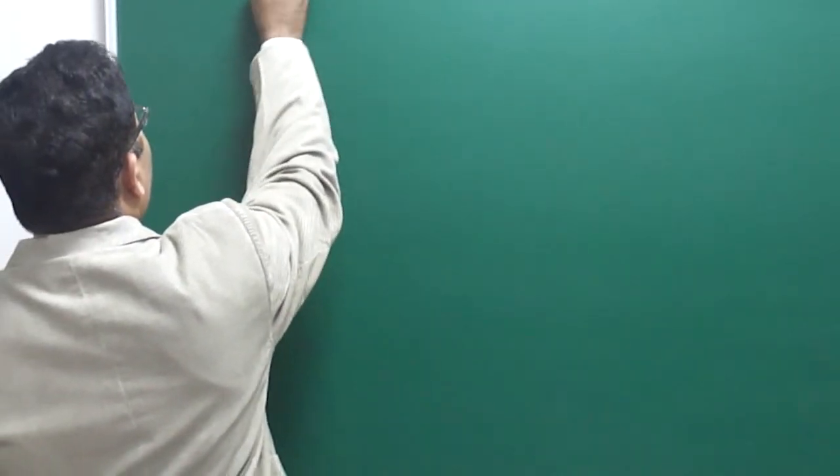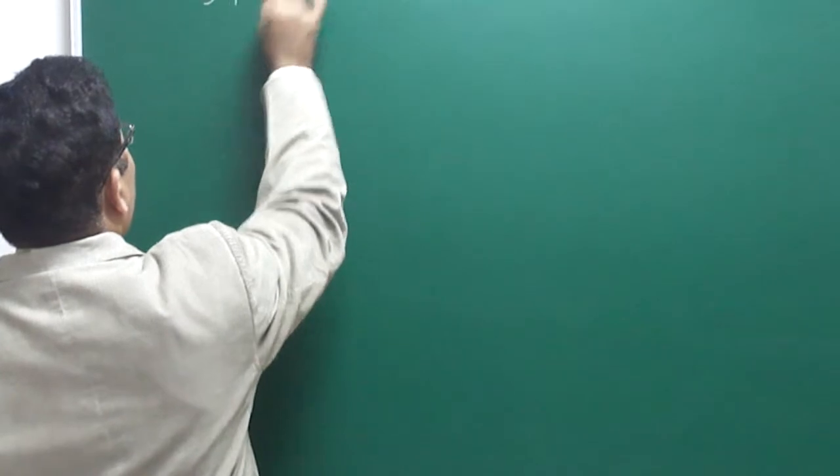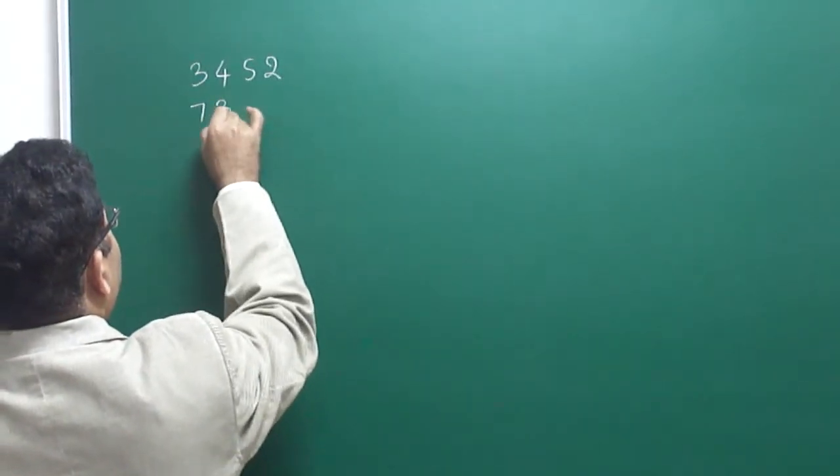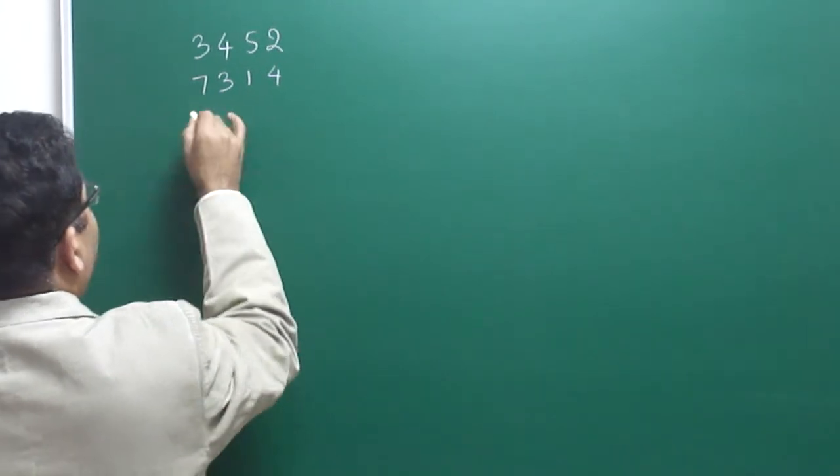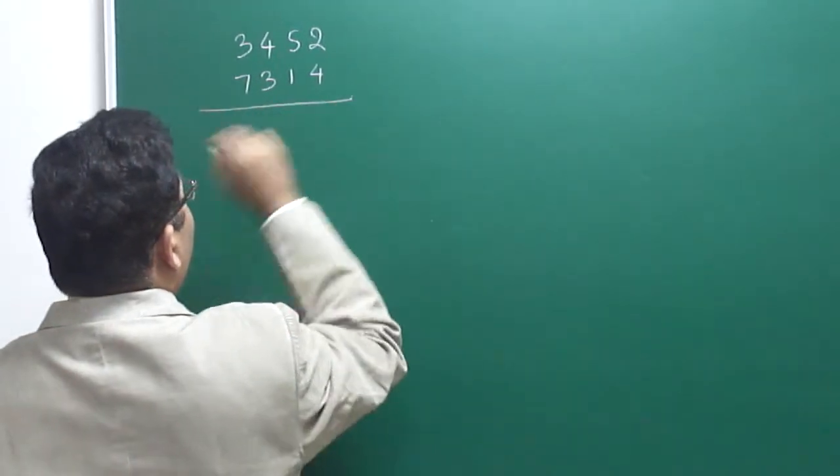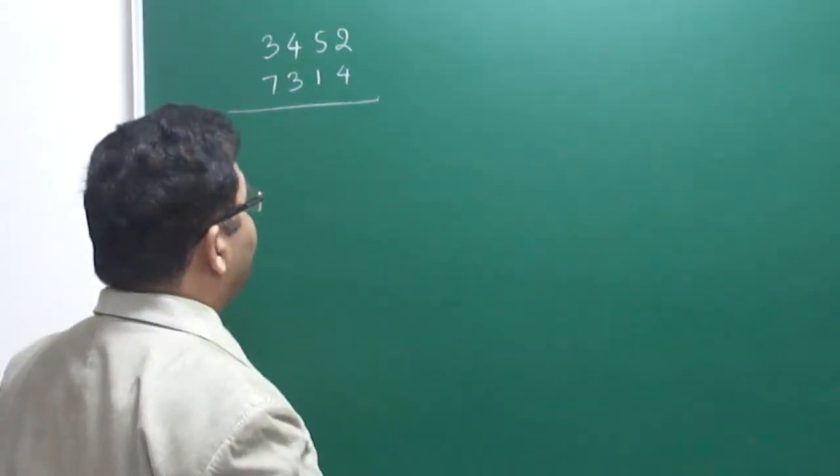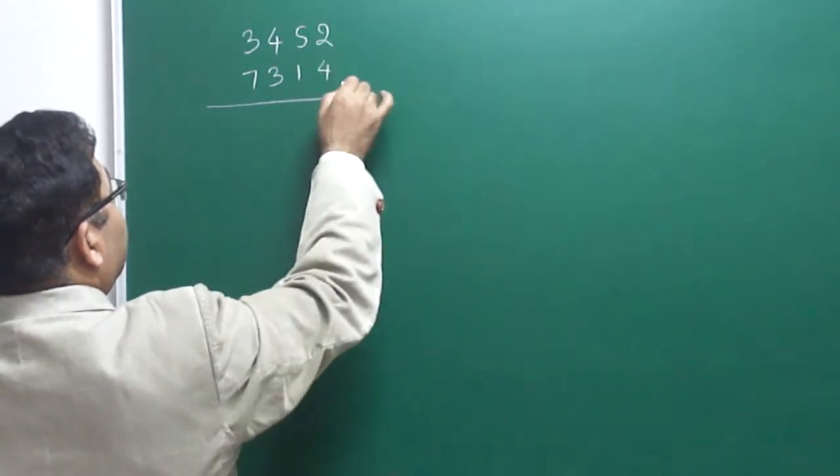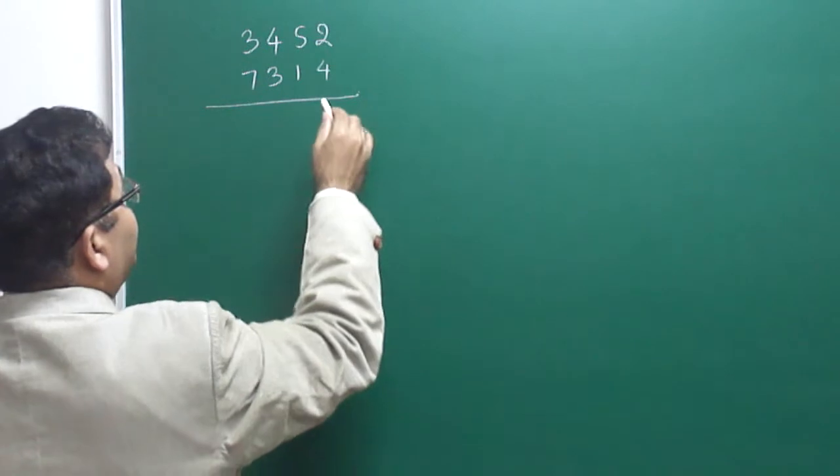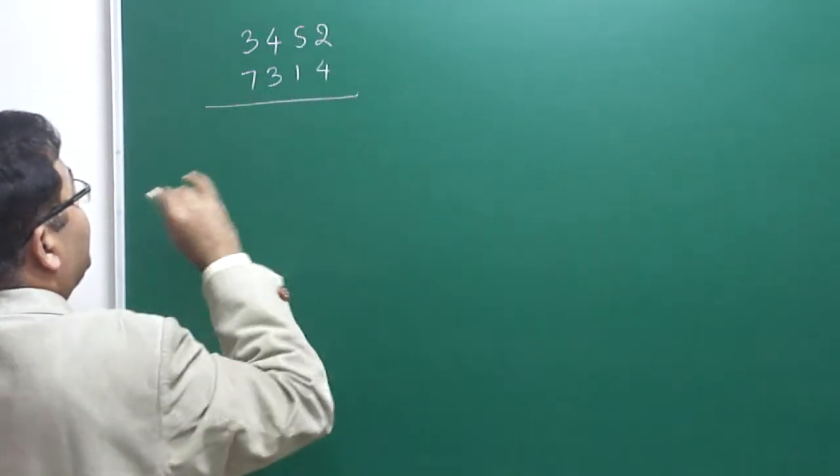You will be able to solve after learning this in almost 5 to 7 seconds. But let me explain this first, how to deal with this question. Suppose someone has given 3, 4, 5, 2 times 7, 3, 1, 4 like this. You have to multiply these 4 numbers. In the previous techniques we discussed the same process we will continue here and we will write it in one line.